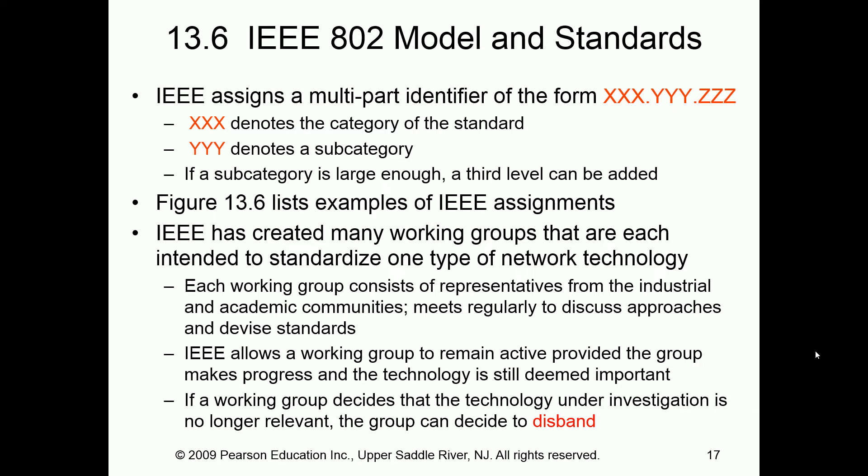Let's talk about the identification portion of our layer 2 model. We'll talk about MAC addresses, but specifically our models and standards — categories and subcategories, like 802.dot-whatever. 802 is our main category, and they might have subcategories and sub-subcategories.